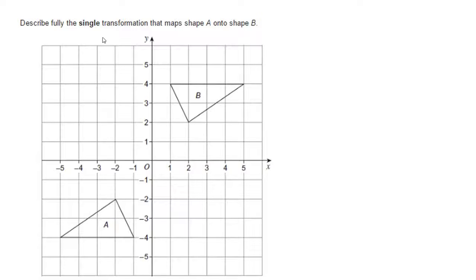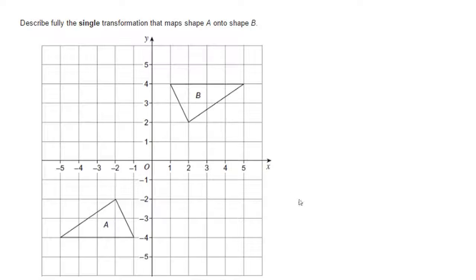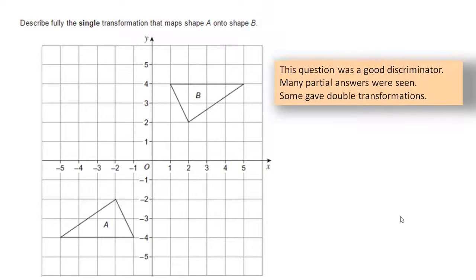We have to describe fully the single transformation that maps shape A onto shape B. In this GCSE exam question, interestingly there are actually two ways of performing a transformation that will map all the vertices — in fact the whole of shape A onto B. I'm going to go through both ways of answering this question. Let's have a quick look at the examiner's remarks.